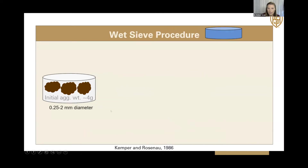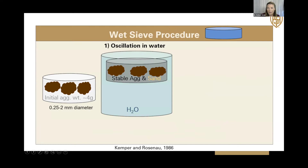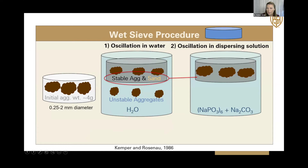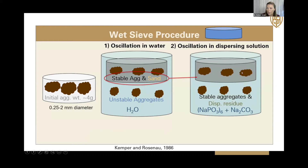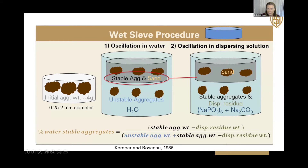Next, we have the wet sieve procedure. It's a little different in that it starts out with about four grams of air-dried aggregates, also placed on a sieve and then inside a water container. That sieve is oscillated and the unstable aggregates flow out. What's remaining on top is placed in another container with a dispersing solution and oscillated again to separate sand particles from stable aggregates. Just like the Cornell method, we get an output unit of percent water stable aggregates.